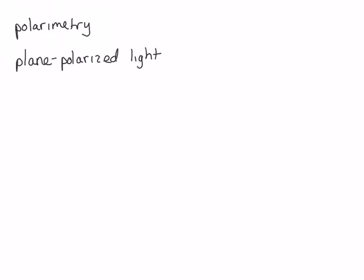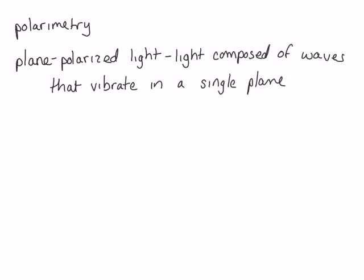Plane-polarized light is light that is composed of waves that vibrate only in a single plane. For example, light that vibrates only in an up-and-down direction, not left to right or into or out of the screen. Because it vibrates in a single direction, we can measure its rotation.